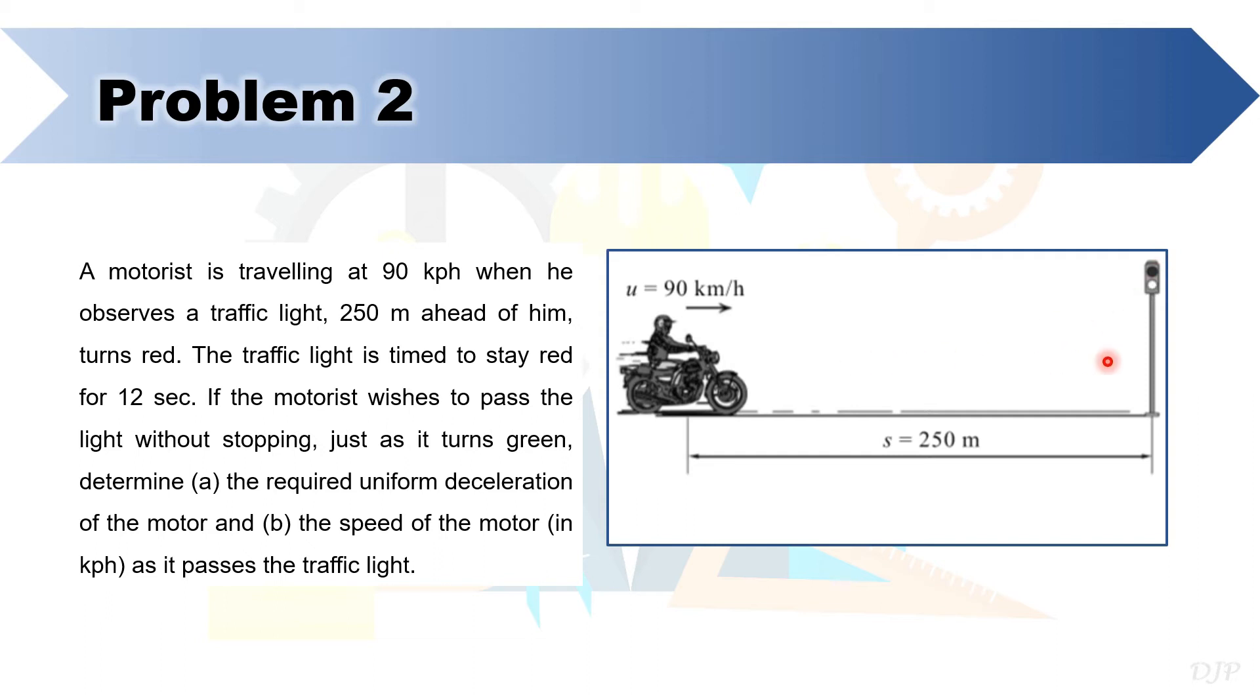So when the light is green, he can go directly. The motion will be direct if the motorist arrives at the traffic light at exactly 12 seconds.